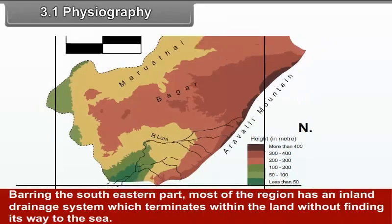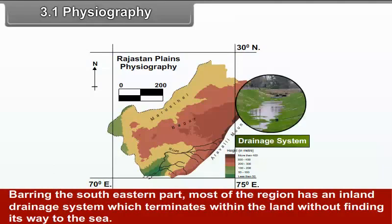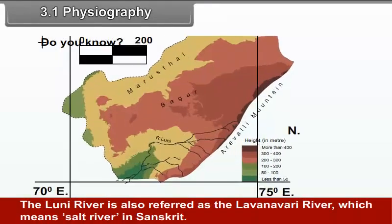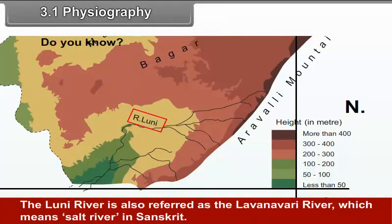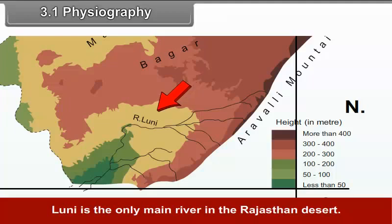Bearing the southeastern part, most of the region has an inland drainage system which terminates within the land without finding its way to the sea. The Luni River is also referred to as the Lavarnvari River, which means Salt River in Sanskrit. It rises in the Pushkar Valley of the Aravli Range. Luni is the only main river in Rajasthan Desert.